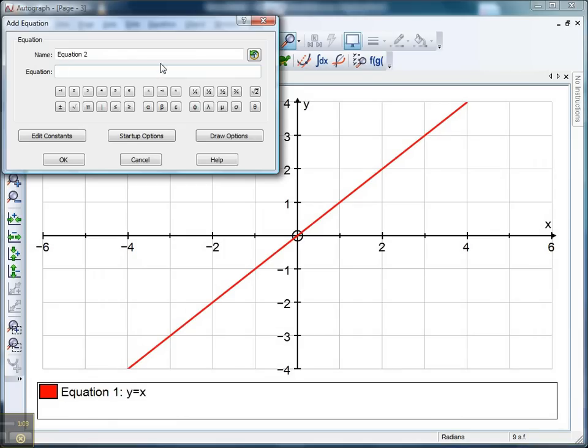1 minus root x all to the power of a third. So here we go. y equals brackets, 1 minus, my square root button's there, root x, close my brackets. And to do the power of, I'm going to do shift on my keyboard and press the number 6 to get that little hat to the power of a third.